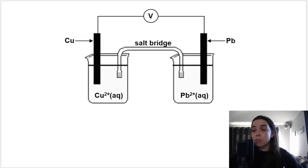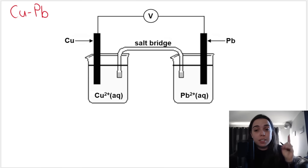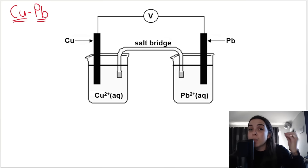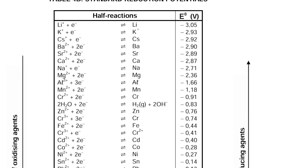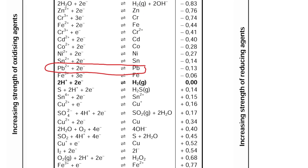Looking at this galvanic cell, we have a copper and lead cell — Cu and Pb. A lot of students make the mistake of thinking the anode is always on the left-hand side — that's not always the case, you have to consult table 4b. Step one is to look for your substances on the table. We're going to look for copper and lead and circle them. Starting at the top of the table, looking down, I can see lead — Pb — so I'll circle that. Then looking for copper, there are a few options: Cu+ and Cu2+.